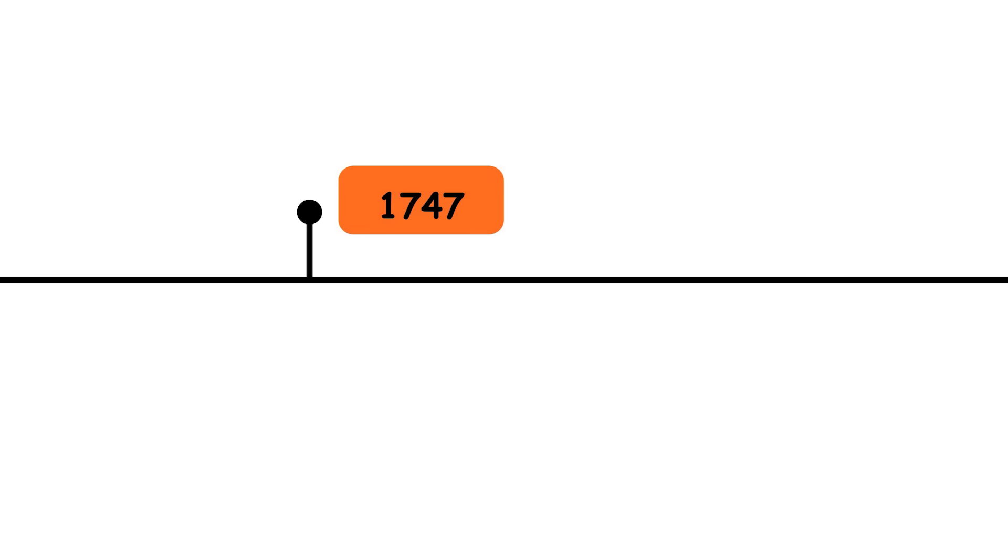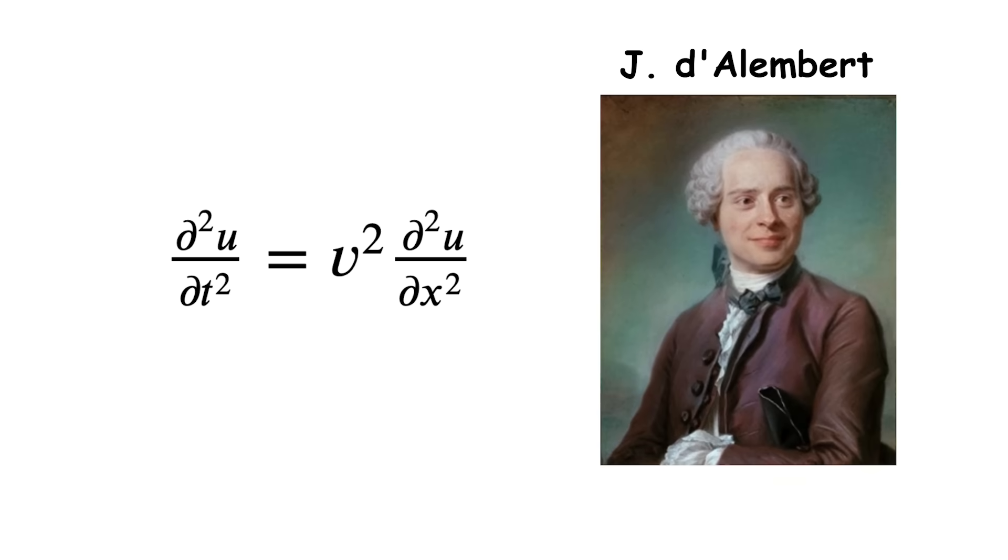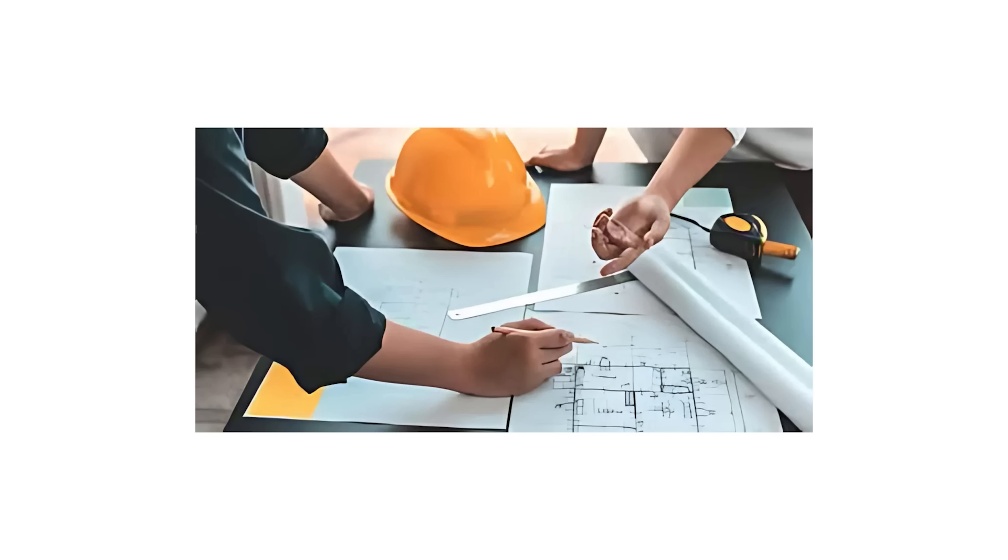1747: Wave Equation. D'Alembert's Wave Equation describes the behavior of waves, such as sound and electromagnetic waves, in media. It is key in physics, engineering, and telecommunications, allowing us to understand and model wave propagation phenomena.